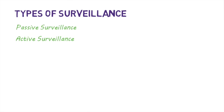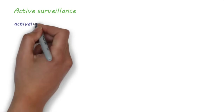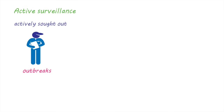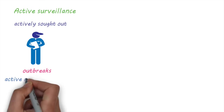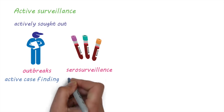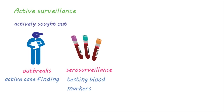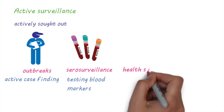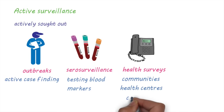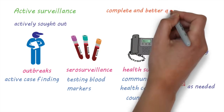Now let's take a look at active surveillance. In contrast to passive surveillance, in active surveillance, health data is actively sought out. This type of surveillance is commonly used during outbreaks — health teams may visit the community to actively seek out cases that may not have otherwise presented to health centers. Another example is serosurveillance, which involves testing blood in a selected population for various markers, such as checking for antibodies to detect active or past disease. Health surveys are also a good example of actively seeking out health information — they can be done on community members, health care facilities, or entire countries, on an as-needed or regular basis. Active surveillance provides more complete and better quality data, but is more resource intensive.